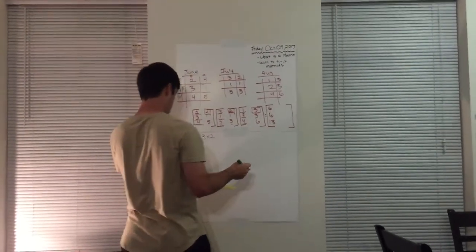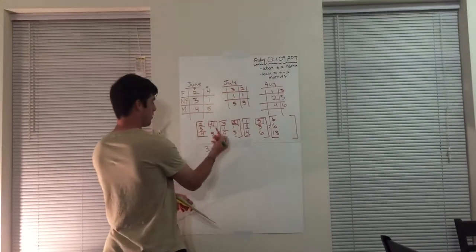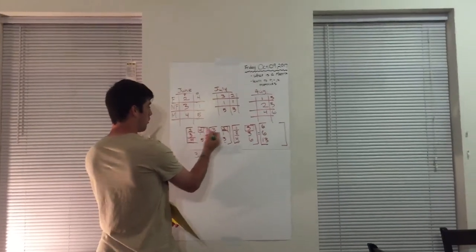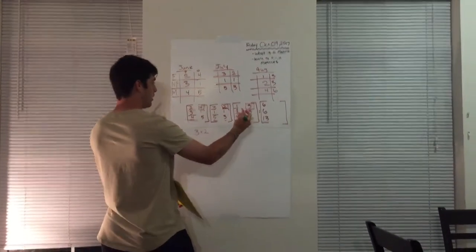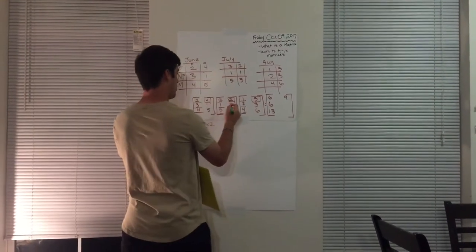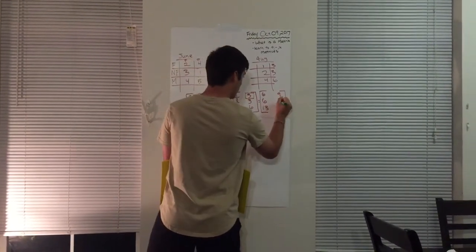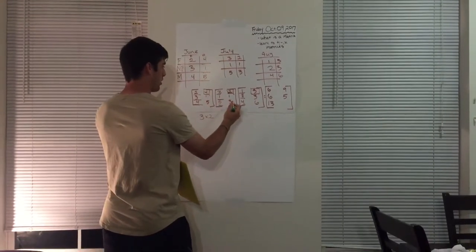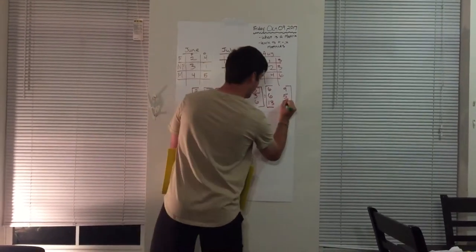And then you move on to the next column, four plus two plus three, which is equal to nine, and then one plus one plus three, which is five, and then five plus three plus six, which is 14.